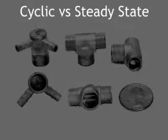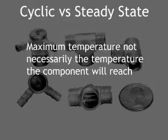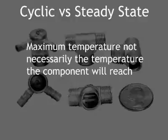The maximum temperature in a cyclic environment does not necessarily indicate the temperature that the component will reach. For example, aluminum and magnesium pistons function in gasoline engines at cyclic temperatures with maximums in excess of 3,000 degrees Fahrenheit, while gas turbine wheels require special high-temperature alloys to operate at 2,200 degrees Fahrenheit.